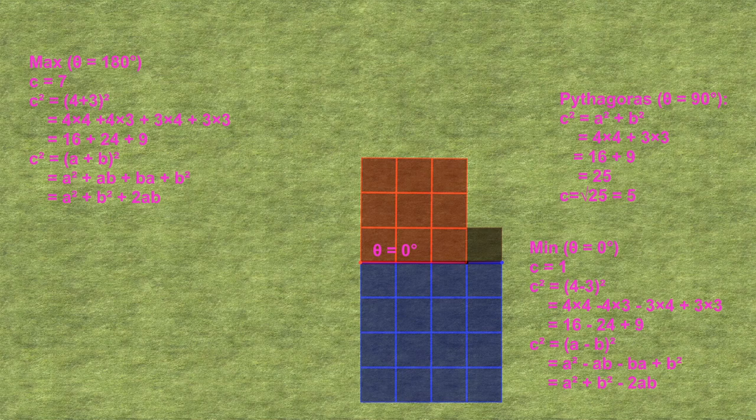The trick is to now realize that the area of 25 in the Pythagorean case had to be decreased by 24 to get to 1. This is the same number that was added in the 180 degree case.